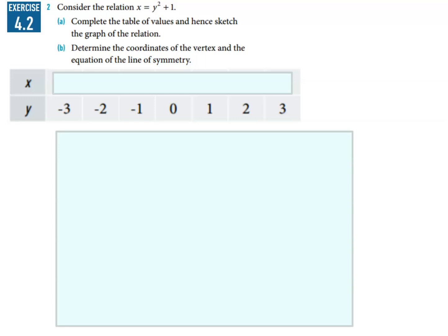So consider the relation x equals y squared plus one. Part A: complete the table of values and hence sketch the graph of the relation, and determine the coordinates of the vertex and the equation of the line of symmetry. So stop the video and have a go.